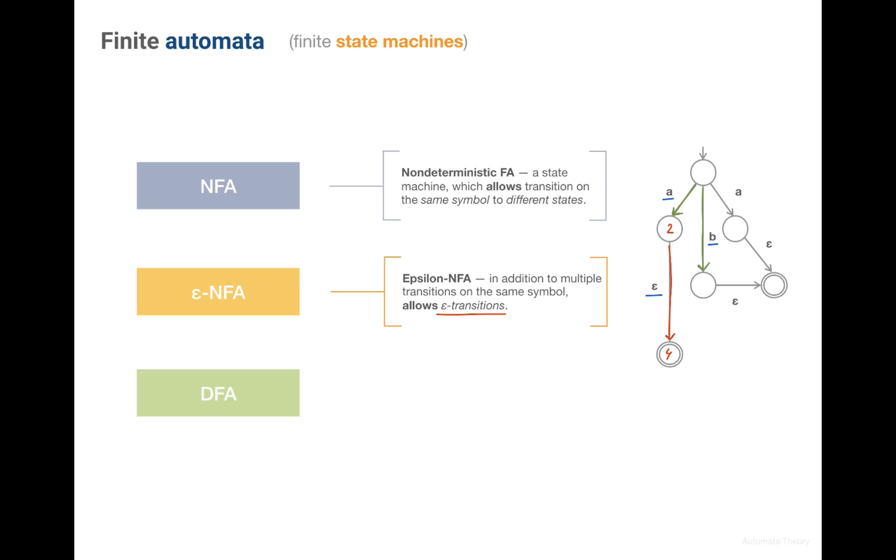Now when we know what NFA and Epsilon NFA are, it is simple to define what a DFA is. A DFA basically forbids what we are allowed in the NFA and Epsilon NFA.